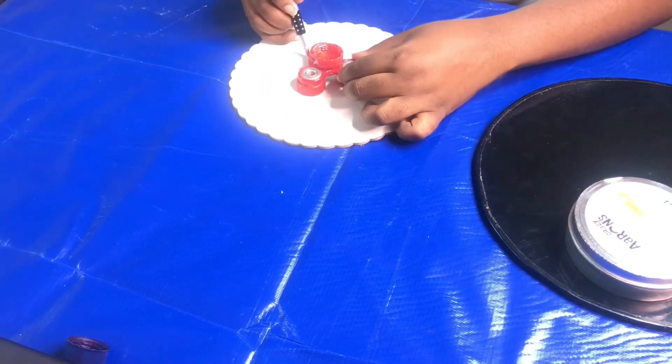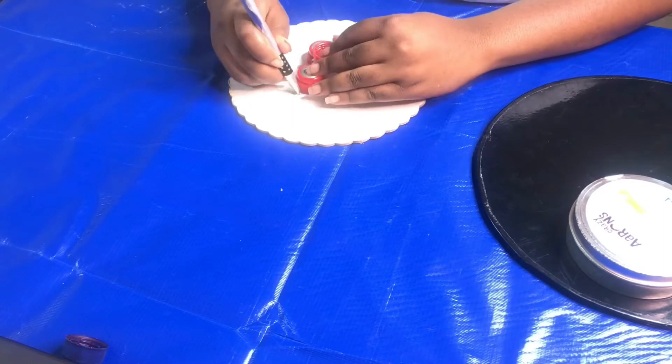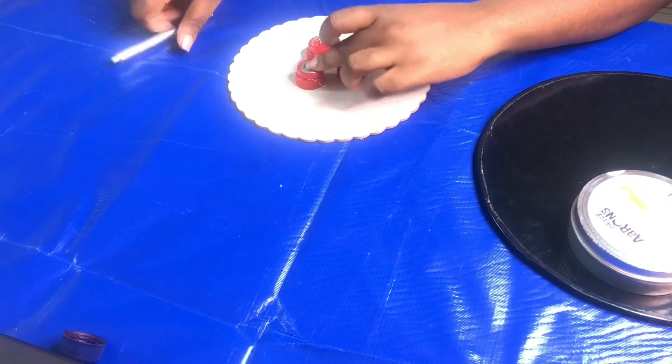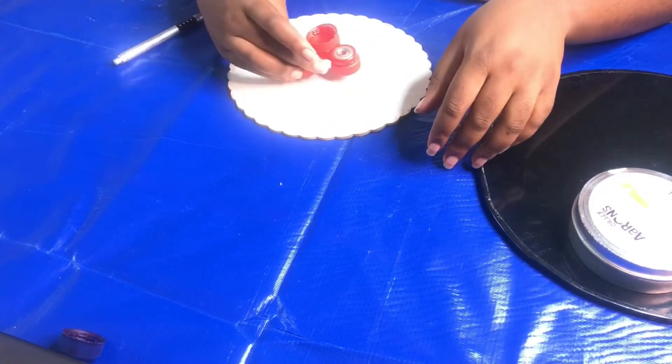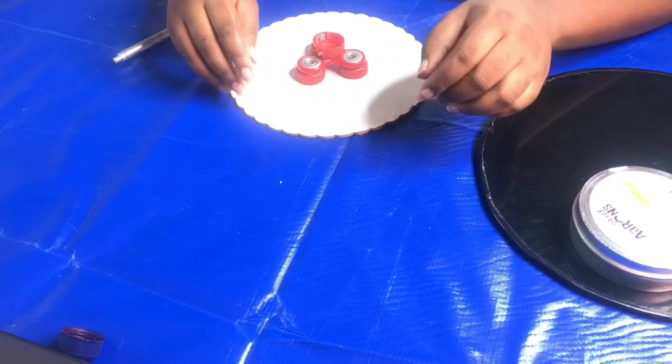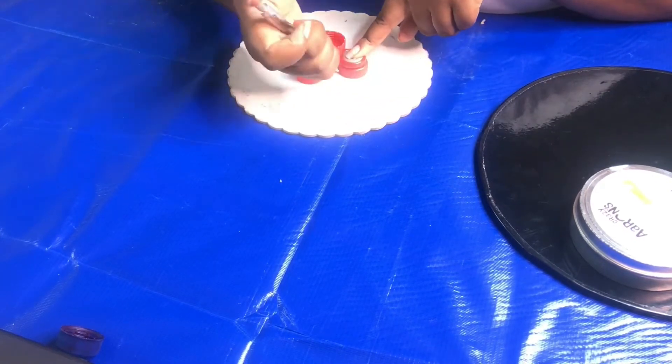And then you're going to mark where your bottle cap is going to stand, and you're going to take it off and you're going to put the glue gun on there.